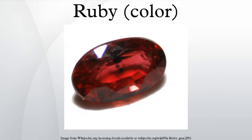Displayed at right is the color antique ruby. The first recorded use of antique ruby as a color name in English was in 1926. The color antique ruby is a dark tone of ruby. The source of this color is the ISCC-NBS Dictionary of Color Names, color sample of antique ruby.